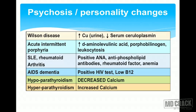Acute intermittent porphyria will be associated with increased delta-aminolevulinic acid levels, porphobilinogen, as well as the presence of leukocytosis. Conditions like SLE — systemic lupus erythematosus — and rheumatoid arthritis: you may find positive anti-nuclear antibodies, positive ANA, anti-phospholipid antibodies, rheumatoid factor, as well as the presence of anemia.